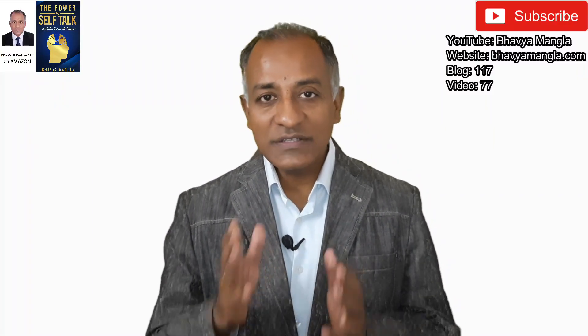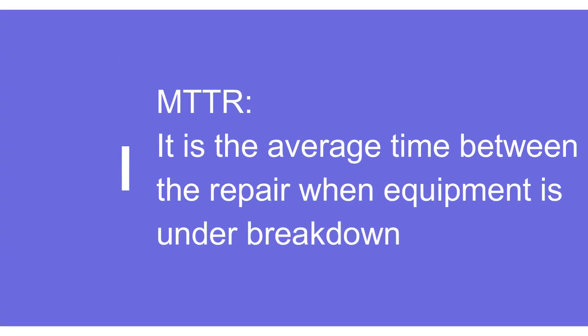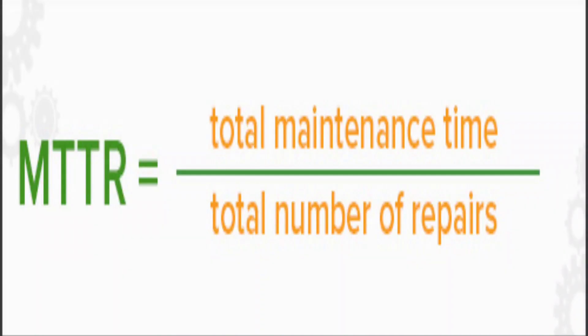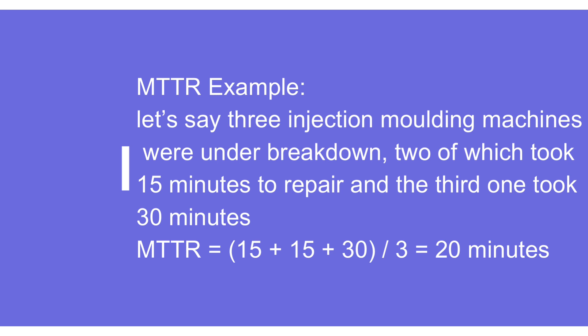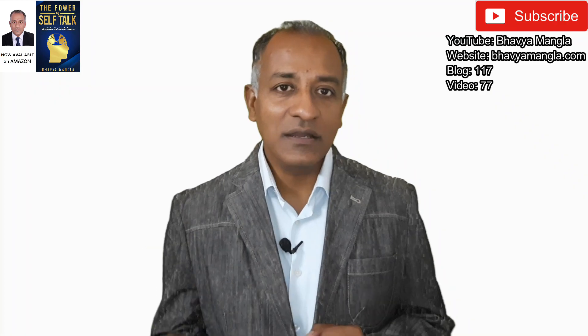Let me start with the basic definition of MTTR — mean time to repair. MTTR is the average time taken for repair when the equipment is under breakdown. The formula is: total time spent for repairing divided by the number of repairs done. For example, take three injection molding machines under breakdown — two for 15 minutes each and one for 30 minutes. Total repair time is 15 + 15 + 30 = 60 minutes. Dividing by three breakdowns gives an MTTR of 20 minutes.